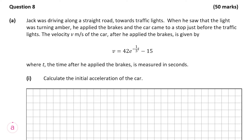When he saw that the light was turning amber, he braked and the car came to a complete stop just before the traffic lights. The velocity, given in meters per second, after he applied the brakes is given by the formula v = 42e^(−t/3) − 15, where t is the time in seconds after he applied the brakes. Question A, Part 1 is worth 5 marks and wants us to calculate the initial acceleration of the car.